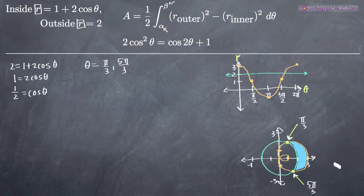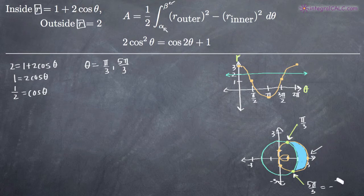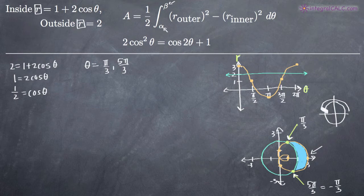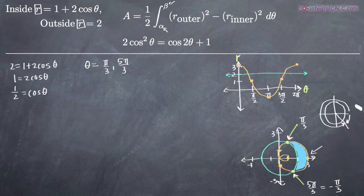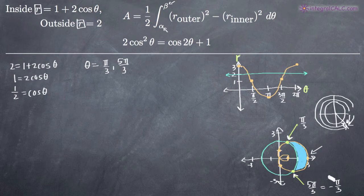The area that lies inside the first curve and outside the second curve is the part shaded in blue, which means we're integrating from 5 pi over 3 to pi over 3. Since this is the lower limit of integration, we want to change it to negative pi over 3. On the unit circle, going counter-clockwise an angle of 5 pi over 3 arrives at the same location as going clockwise an angle of pi over 3. So we can transform positive 5 pi over 3 into negative pi over 3.